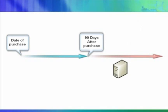As such, you would now need to purchase another full server license for the new server. This server license could be acquired through OEM again from the server manufacturer, or you could purchase a server license through volume licensing programs such as Open Business or Open Value. If you choose to purchase another OEM server license from the server manufacturer, you would then have another 90 days to decide if you want to add software assurance to this new OEM server license.